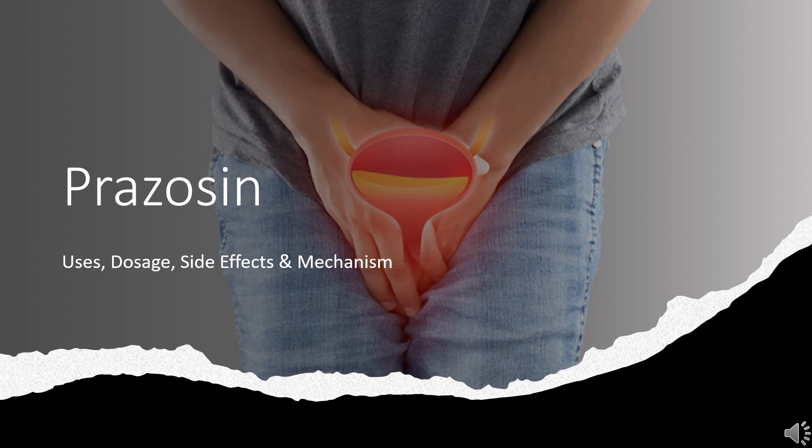Prazosin is an alpha blocker that causes a decrease in total peripheral resistance and is used to treat hypertension.